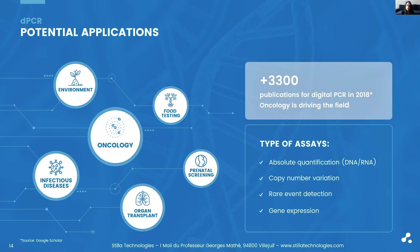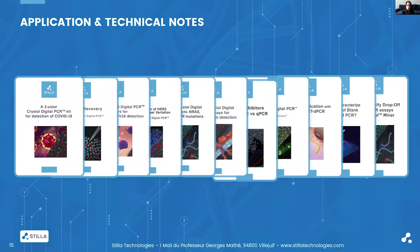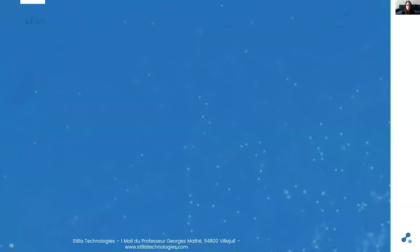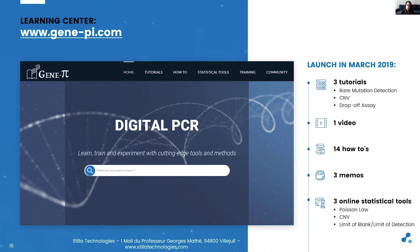The NICA system is compatible with many sample types to address a wide range of applications. Advantages of this easy-to-perform digital PCR workflow will benefit your analysis for absolute quantification of DNA or RNA, copy number variation assessment, rare variant detection, or gene expression analysis. If you want to know more about specific applications, I invite you to visit our application and technical notes on our website. The latest one describes the assay developed by our Chinese distributor for COVID-19. For more on crystal digital PCR principles and applications, you can also visit our online learning center at www.gene-pi.com.